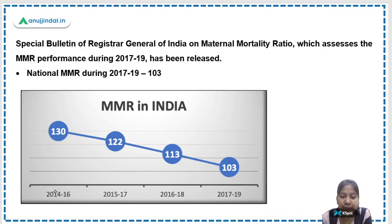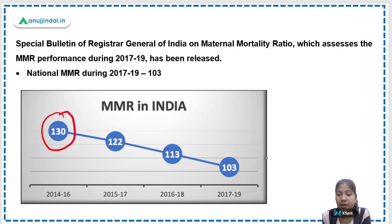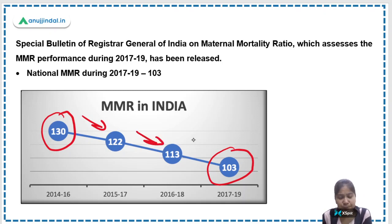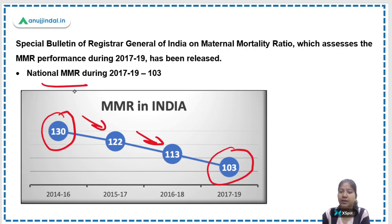In 2014 to 2016, the MMR in India was 130. It has now reduced to 103, and you can consistently see the improvement over the years. That was the national maternal mortality ratio.